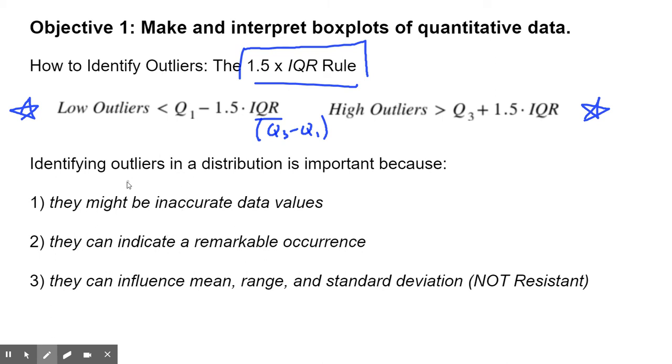When you identify outliers, three things. Number one, if it's an outlier, it might just be an inaccurate data value. Maybe you just mistyped it. Number two, it can indicate something remarkable has happened, like a big feat in sports, things like that. And number three, most importantly, remember that outliers influence the mean and the standard deviation. They also influence the range, but we don't really care about the range as much. This is the idea of resistance. Because the mean and standard deviation take into account every single data value, they are not resistant to these outliers.